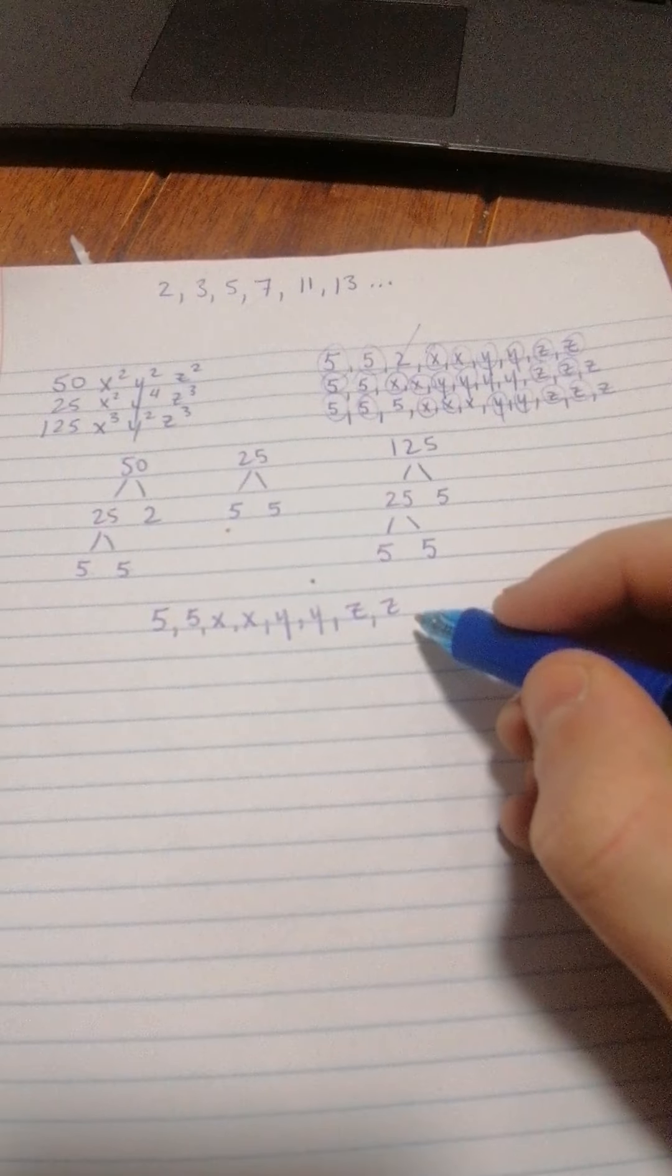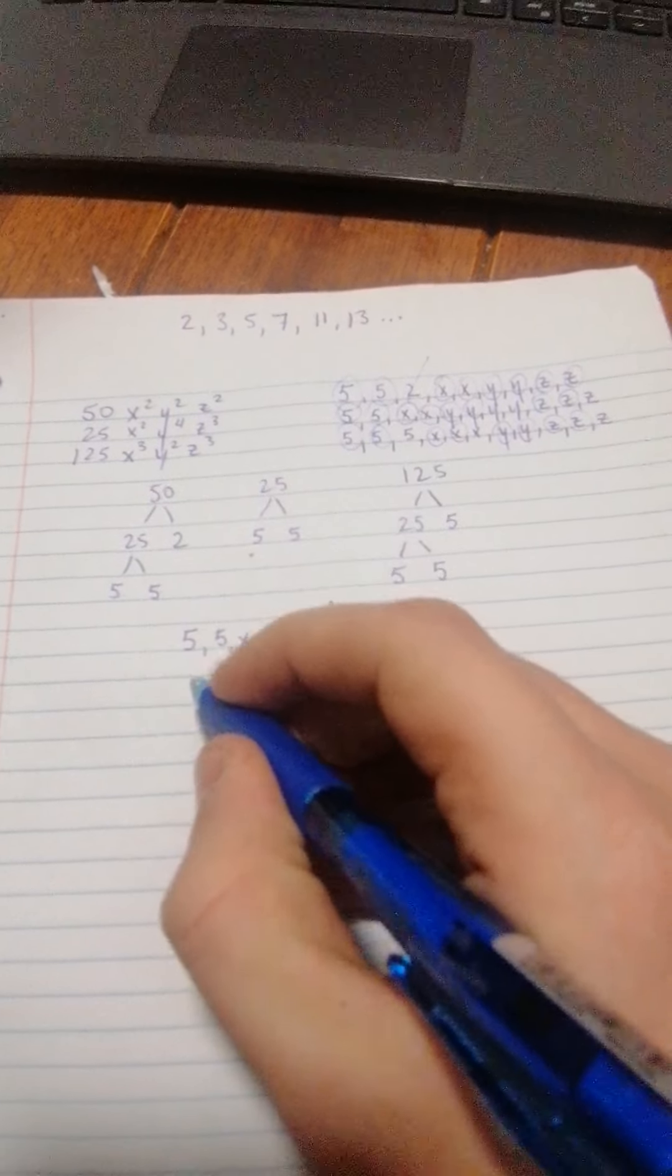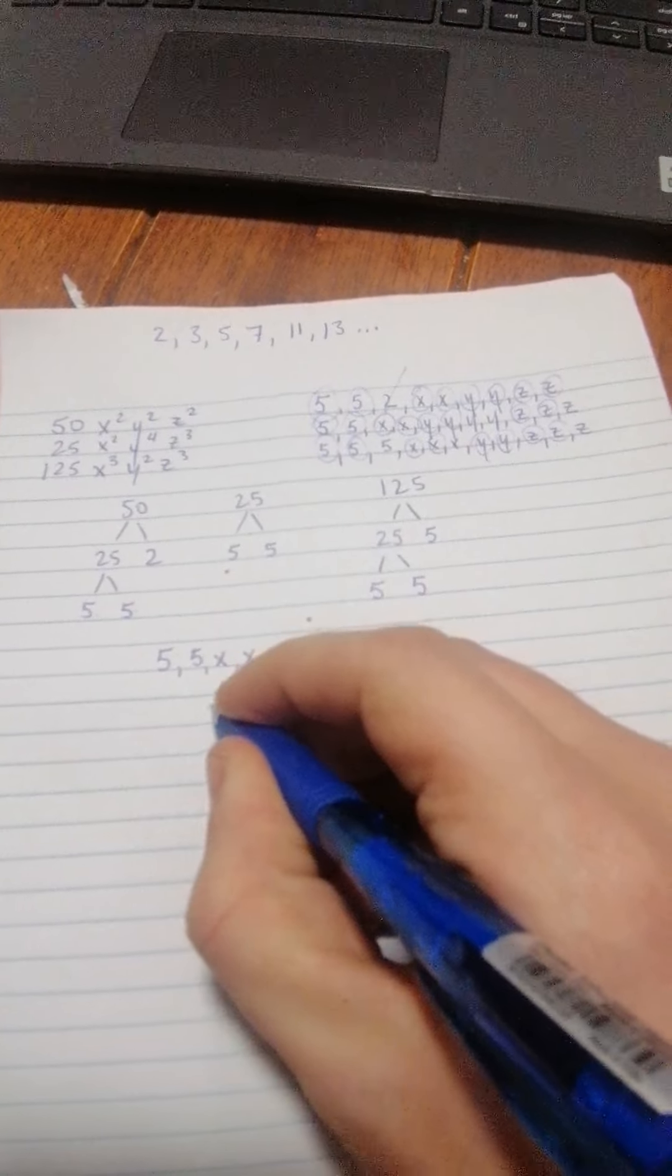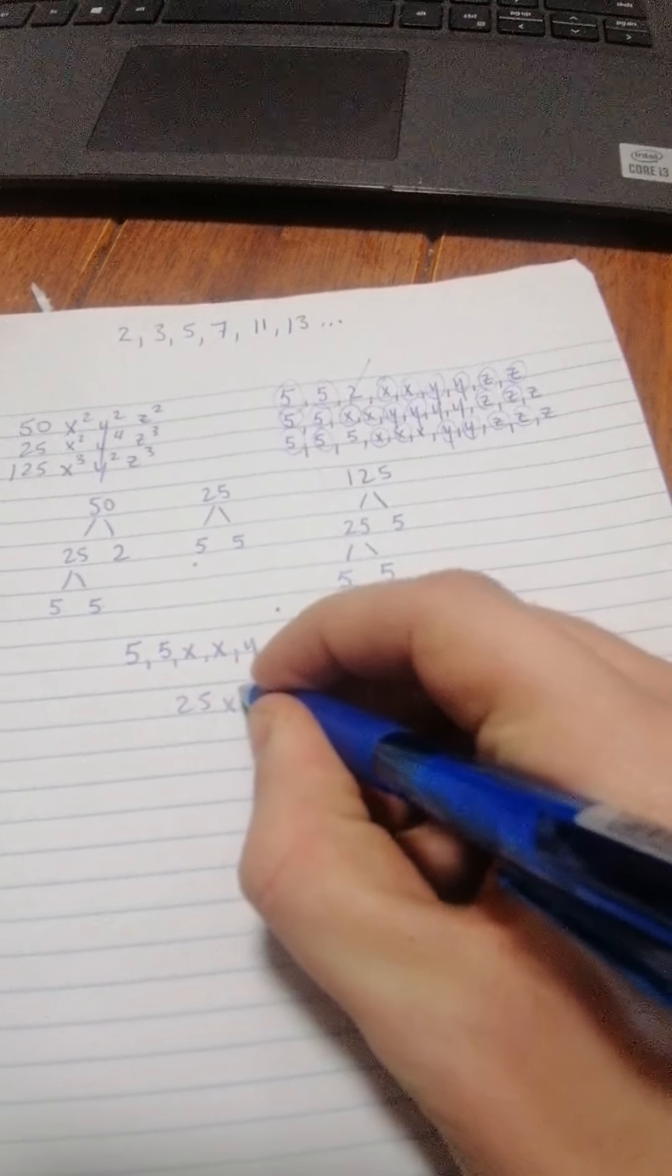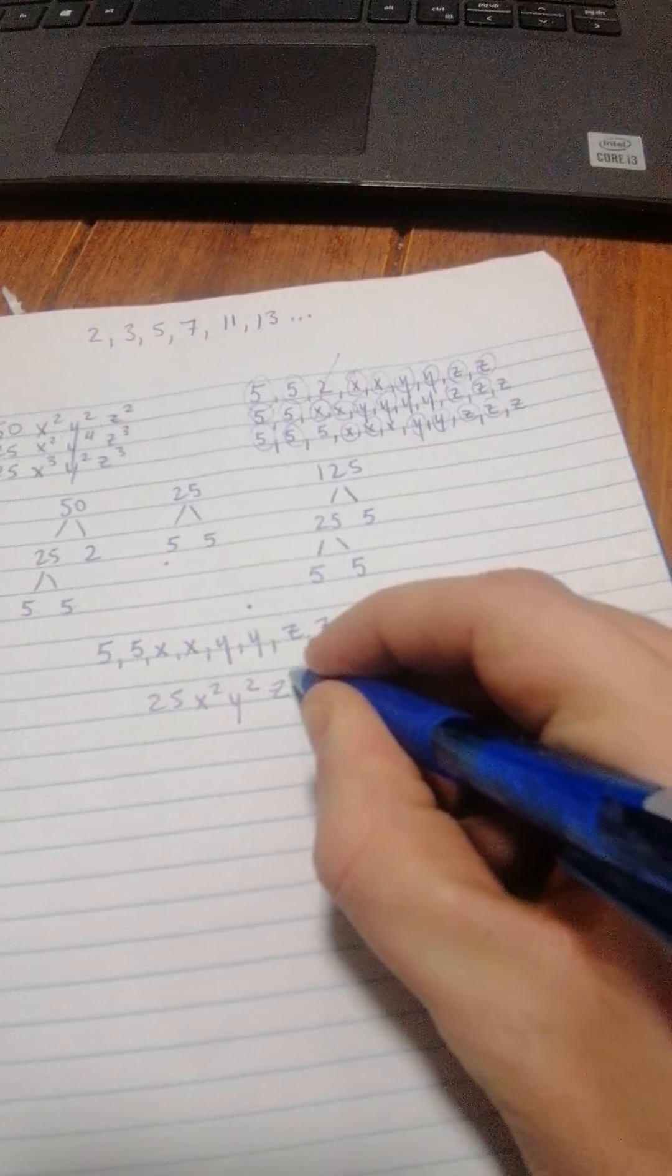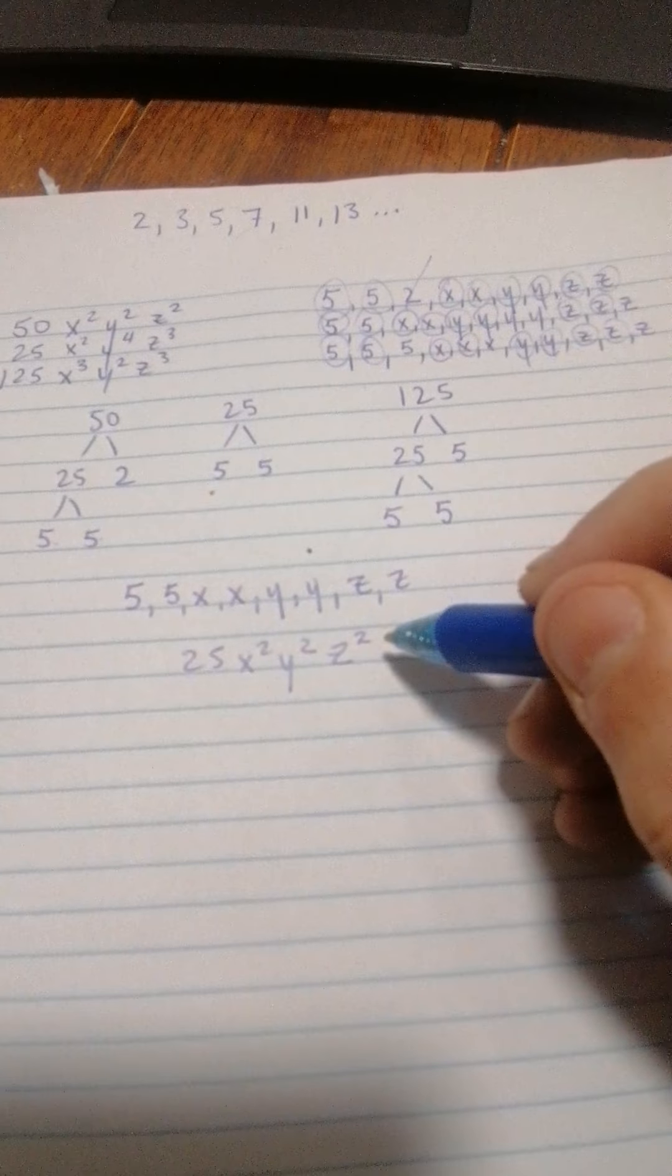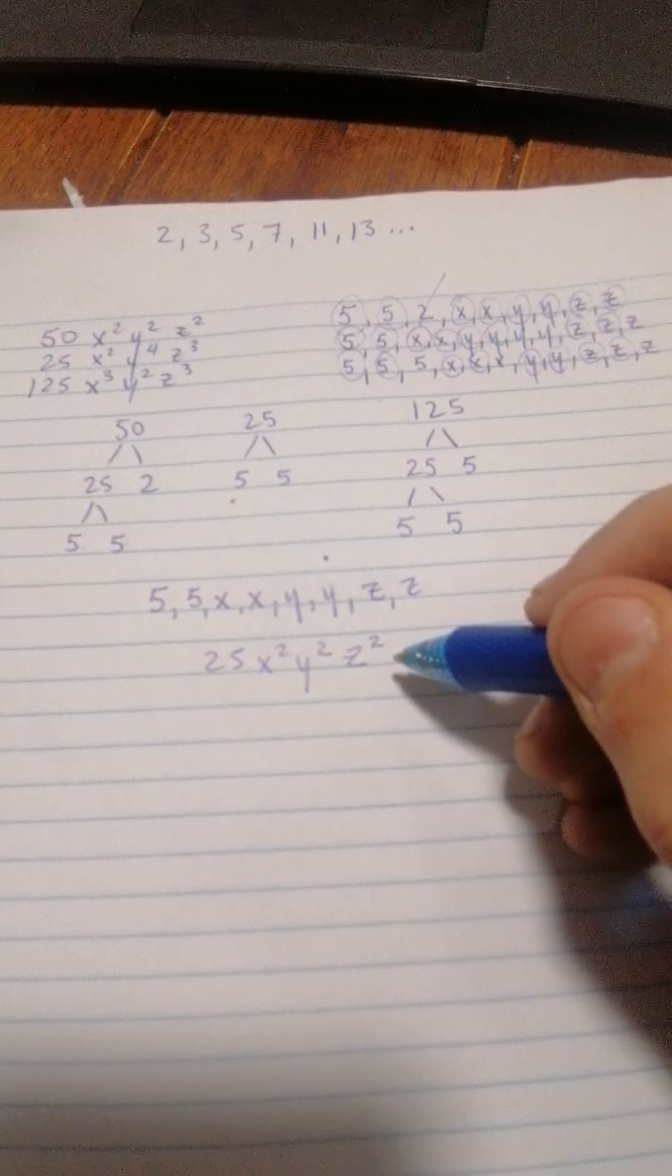But these are the common factors we're left over, and we have to simplify them. So it's actually really straightforward. 5 and 5, multiply those, 25. x times x, x squared. y times y, y squared. And z times z, z squared. That's your answer. That's the greatest common factor.